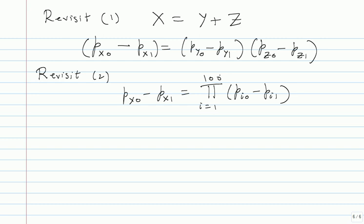From here we need to convert into LLR language. We have p_{x0} - p_{x1} but we want p_{x0}/p_{x1}, i.e., the log of that. The first trick is to divide by (p_{x0} + p_{x1}) = 1 on the left, which doesn't change anything. Then divide numerator and denominator on the left by p_{x1} to get the likelihood ratio: (L_x - 1)/(L_x + 1) = product of (L_i - 1)/(L_i + 1).